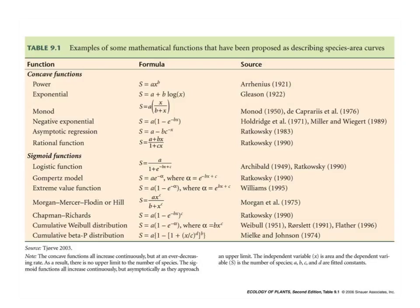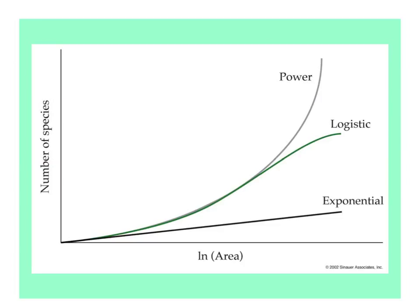There's an interesting table in our book giving examples of mathematical formulas used to describe species area curves. Where s, the number of species, is equal — in Arrhenius' example — to a times x to the b power, where x is area and a and b are fitted constants. Different plant ecologists have proposed different equations. In this figure, three are shown: the power function, the logistic function, and the exponential function, plotted against the natural log of area, which levels out what would otherwise be an exponential curve.